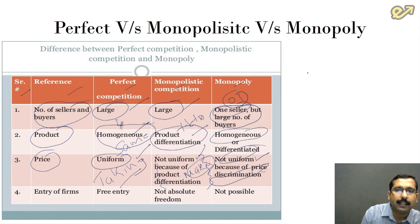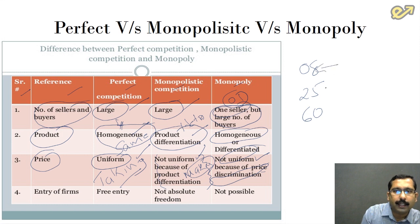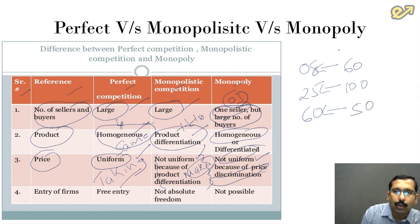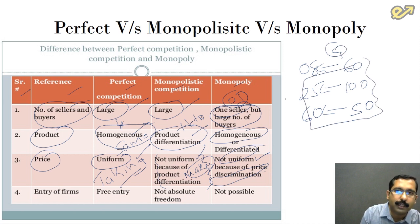Let us take an example. Three kinds of customers go to a monopolist: a child of eight years, a 25-year-old adult, and a 60-year-old senior citizen. The general price of the good is 100 rupees. The child may get a discount and pay only 60 rupees, and the senior citizen may also get a discount and pay only 50 rupees. The good is the same but the pricing is different — this is called price discrimination and can only be practiced by a monopolist.